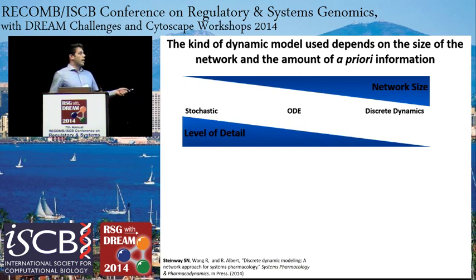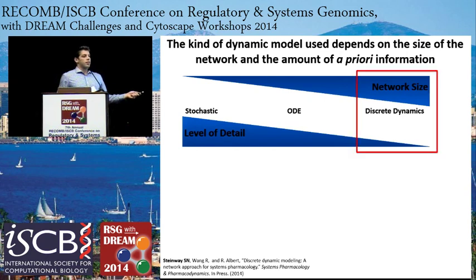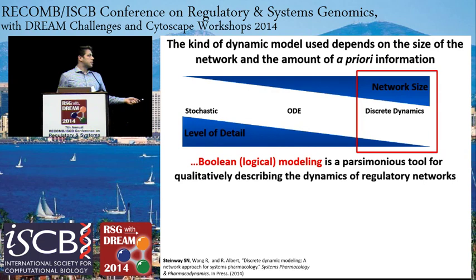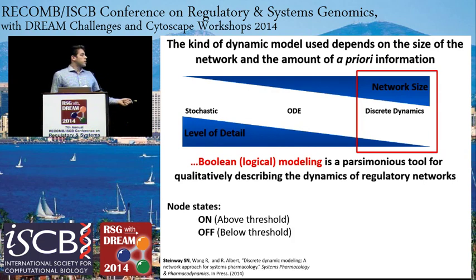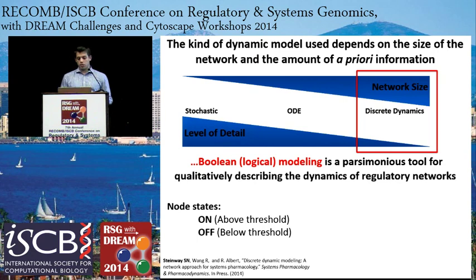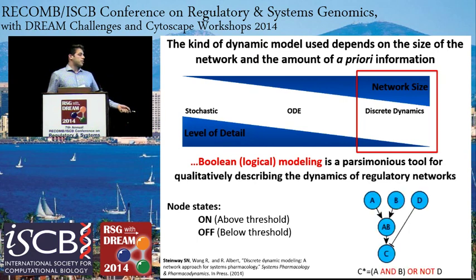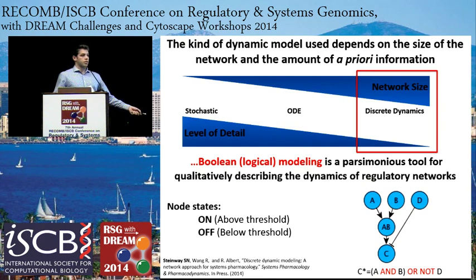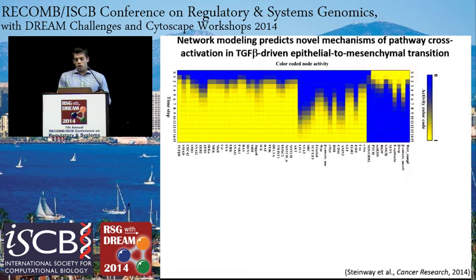There are different ways to model dynamics. Because of the size of the network we're dealing with for EMT, and because of the lack of kinetic information known for most nodes in the network, we chose to use a discrete modeling framework—more specifically, a Boolean or logical modeling framework. In Boolean models, nodes can have two states: on or above some threshold for activity, or off or below some threshold. In a hypothetical network, the regulation of node C is due to nodes A, B, and D, and so there's a logical function regulating node C.